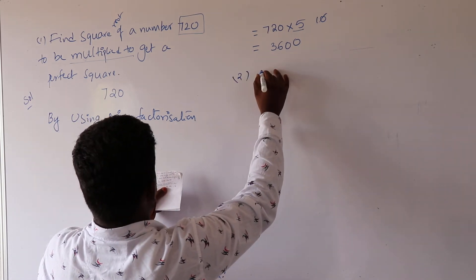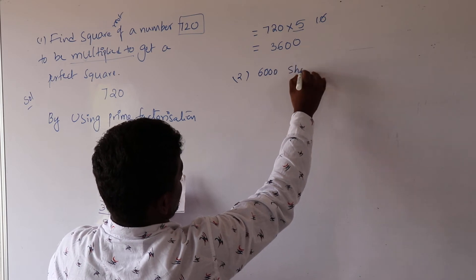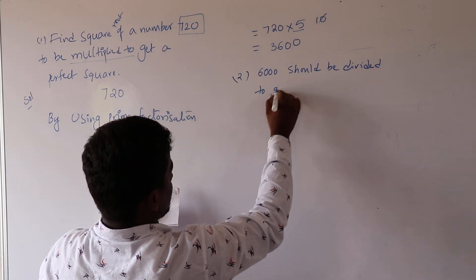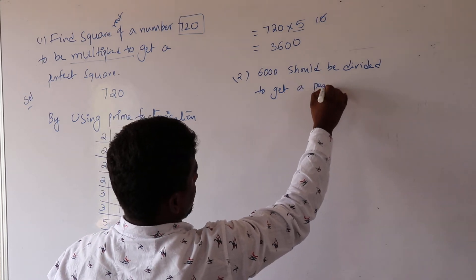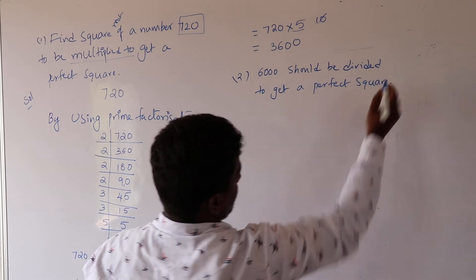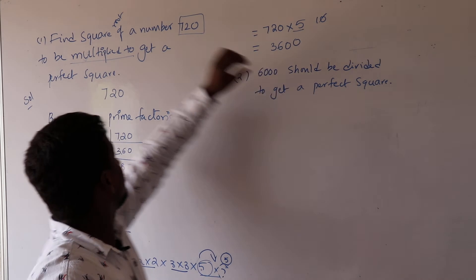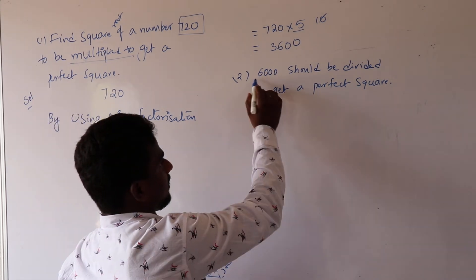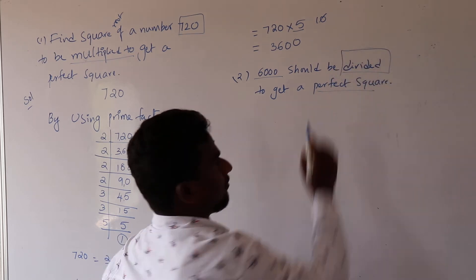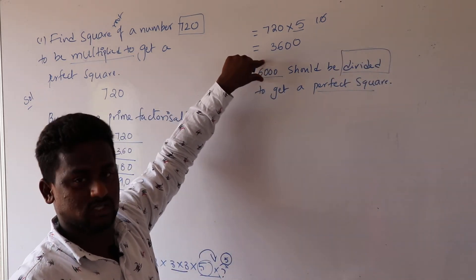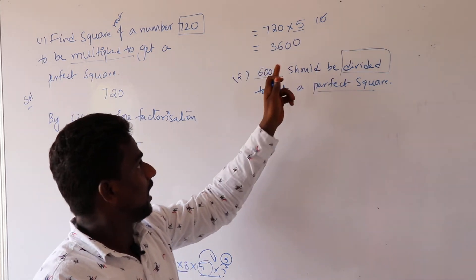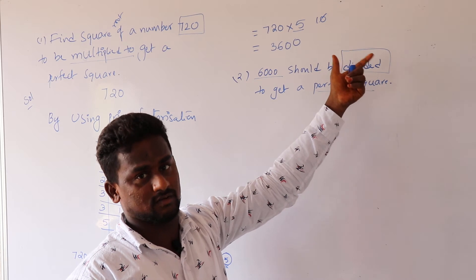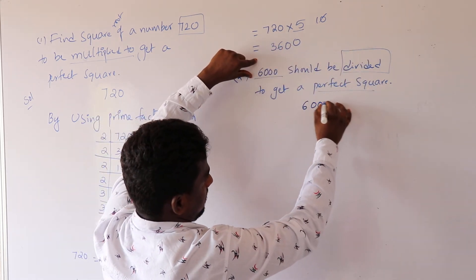Next question. 6,000 should be divided by some number to get a perfect square. This is the second type of question. Unlike the previous problem where we multiplied, here 6,000 needs to be divided by some number so that it becomes a perfect square. We want to calculate that number.